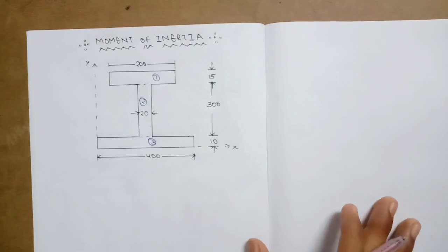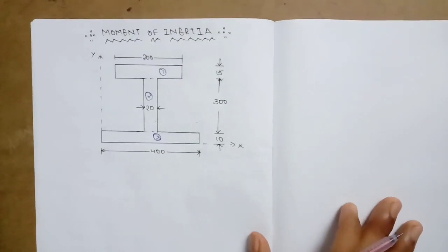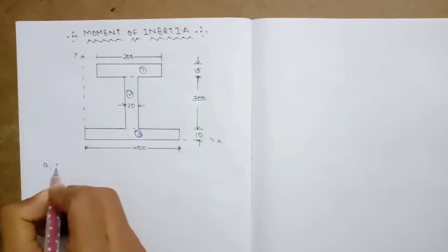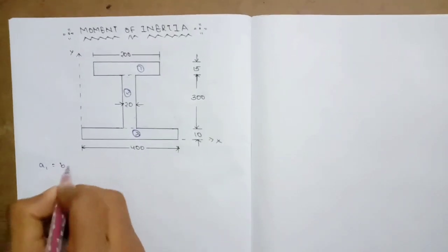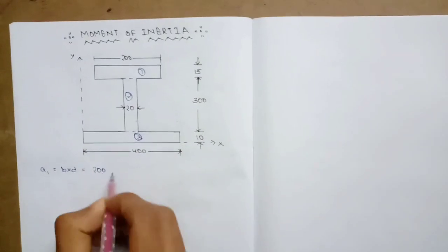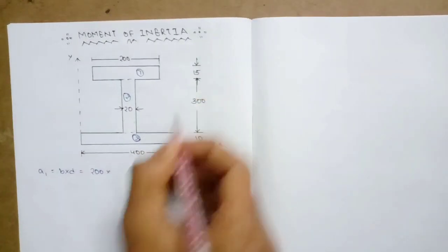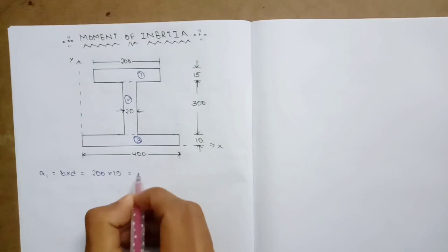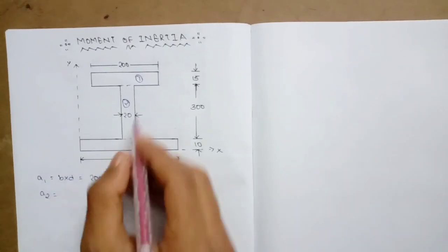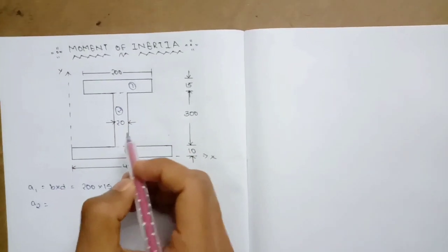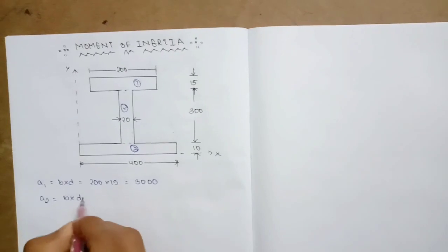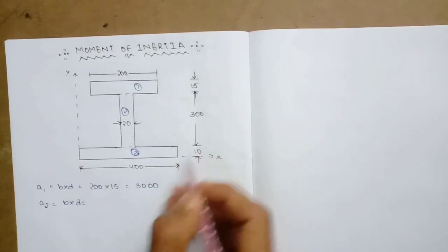Now I will show you the centroid. The area of a rectangle is breadth into depth. The first rectangle has breadth and depth of 15, giving Area 1. The second rectangle has breadth and depth giving Area 2, with value 3000. The second rectangle breadth and depth is 300.